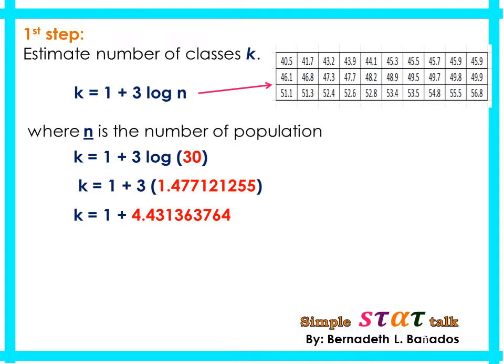Add that to 1 and you will get k = 5.431363764. Round it off, and the estimated number of classes will be 5.